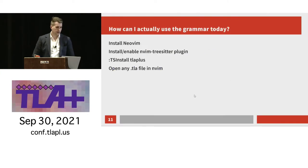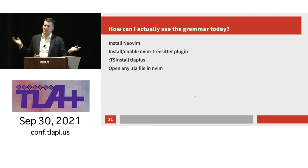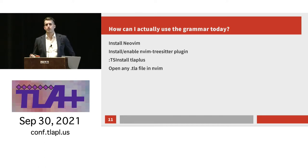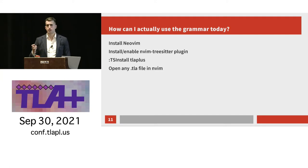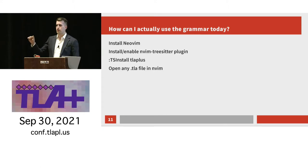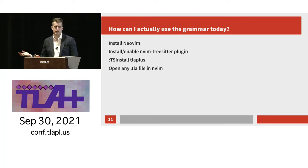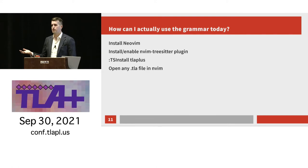If you're not really wanting to write TLA+ dev tooling but want to actually use this today — right now the only application I've gone to the trouble of making is in NeoVim. If you install NeoVim, install the nvim-tree-sitter plugin to enable its support for tree-sitter, and then install the TLA+ grammar — all you need to do is run ':TSInstall tla_plus' — then open any .tla file in NeoVim, and it will be nicely highlighted, which is pretty cool.